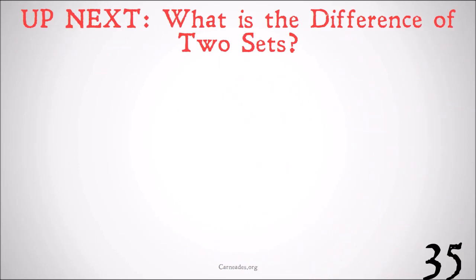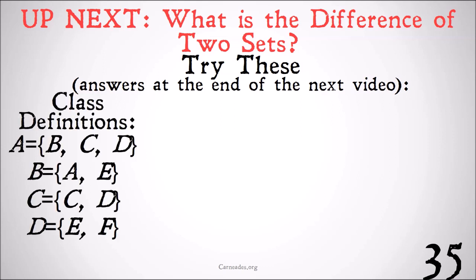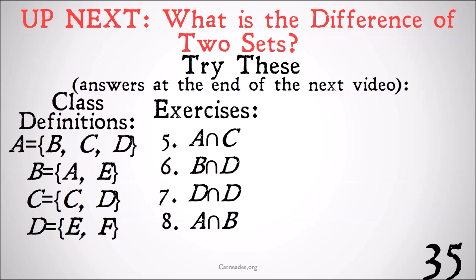Up next, we're going to look at what is the difference of two sets, another relative operation. But before we get to that, give these a try and we'll have answers at the end of the next video. Our class definitions are the same as in the last video, assuming all are unique classes. The exercises are: What's A ∩ C, B ∩ D, D ∩ D, and A ∩ B?